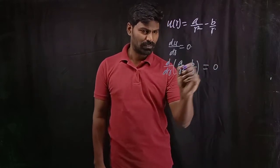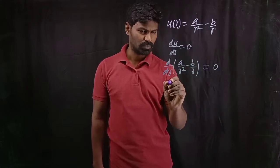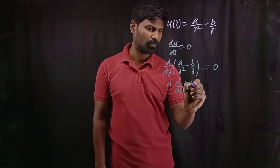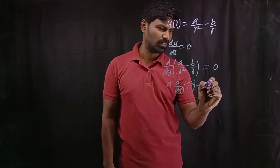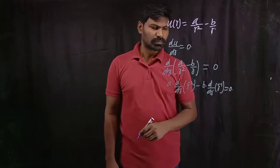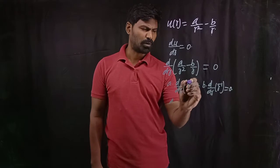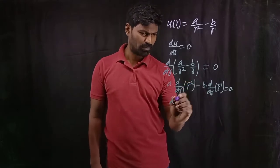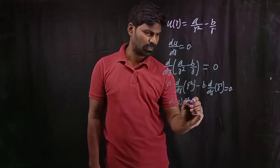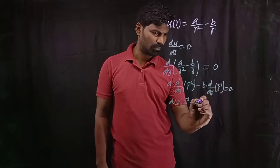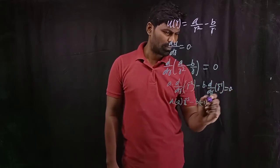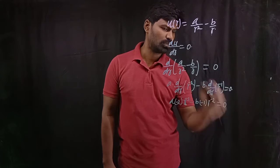When you do the differentiation, you split it between the two terms. A is constant, so d/dR of (1/R²) written as R to the power minus 2, minus B is constant, d/dR of R to the power minus 1, all equal to 0. Using the power rule — n into x to the power n minus 1 — we get: minus 2A into R to the power minus 3, minus B into minus 1 into R to the power minus 2, all equal to 0.